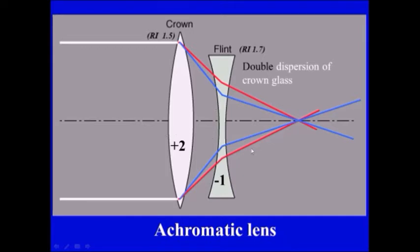Flint has a double dispersion of the crown glass. So if we make such a combination we have here plus one minus one so the net result will be a plus one lens.